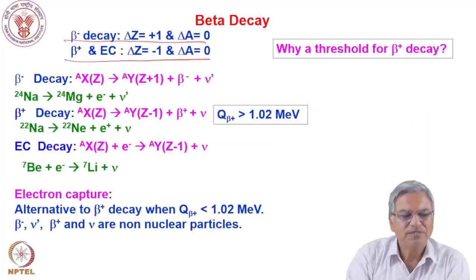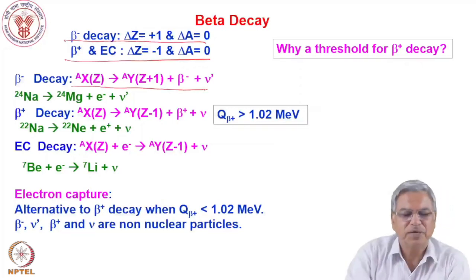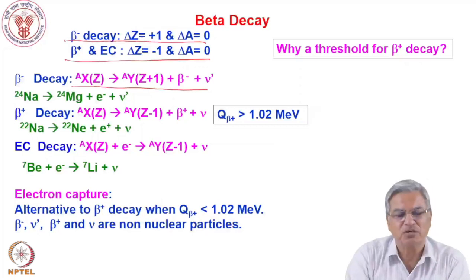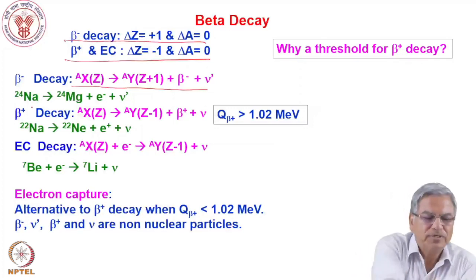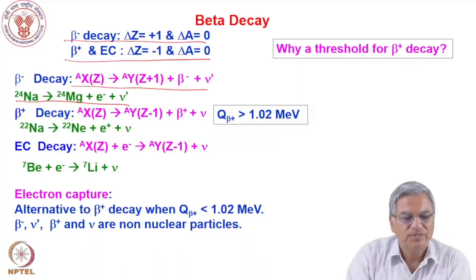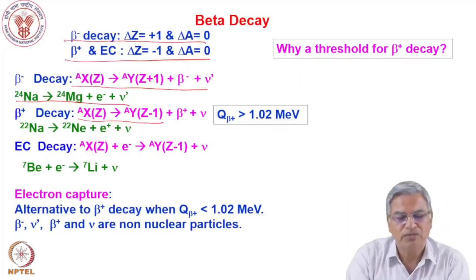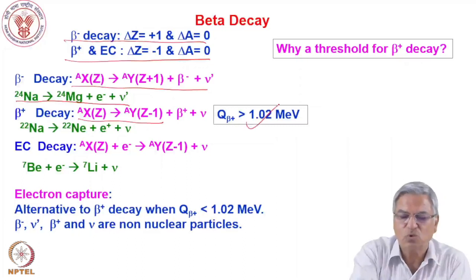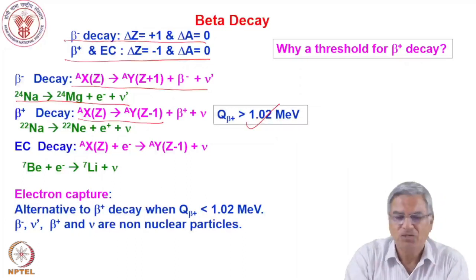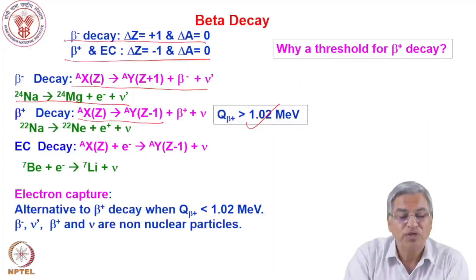I have given the schematic for beta decay. In beta minus decay the atomic number increases by 1, and along with that a beta minus particle — which is an electron — and an anti-neutrino is emitted. For example, sodium-24 emits a beta minus to give magnesium-24. In beta plus decay, the atomic number decreases by 1, emitting a positron and a neutrino, and this reaction has a threshold of 1.02 MeV. Why does this condition arise? Why is there a threshold for beta plus decay and no threshold for beta minus decay?